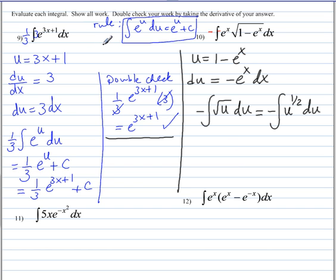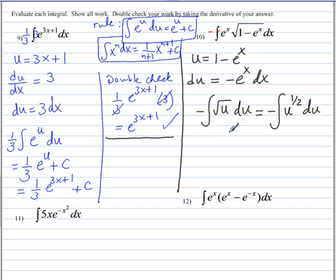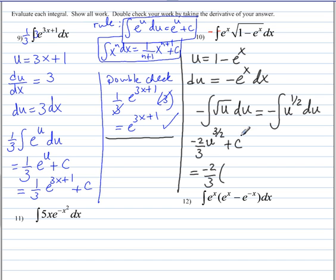We can now use the power rule to take the antiderivative. The rule states the antiderivative of x to the n dx is 1 over n plus 1 times x to the n plus 1 plus c. We add 1 to the exponent: one half plus 1 gives three halves. Dividing by three halves is the same as multiplying by its reciprocal, which is two thirds. Remember the negative is still there, giving negative two thirds times u to the three halves plus c. Substituting back, u is 1 minus e to the x, so we get negative two thirds times 1 minus e to the x to the three halves plus c.